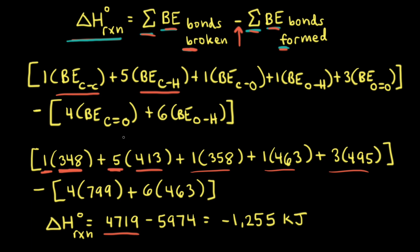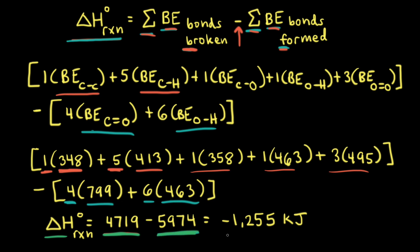Next we do the same thing for the bond enthalpies of the bonds that are formed. The bond enthalpy for a carbon-oxygen double bond is 799 kilojoules per mole, multiplied by four. The bond enthalpy for an oxygen-hydrogen single bond is 463 kilojoules per mole, multiplied by six. When we add these together we get 5,974. So the final standard change in enthalpy is positive 4,719 minus 5,974, which gives us negative 1,255 kilojoules.